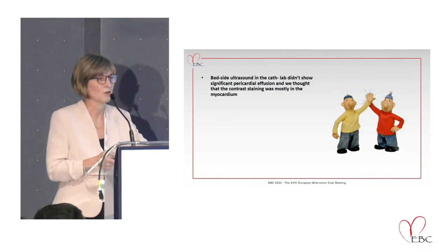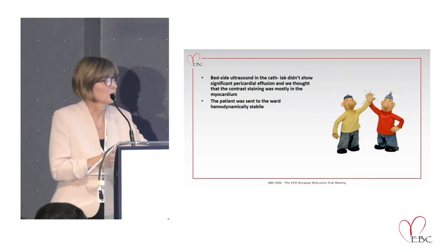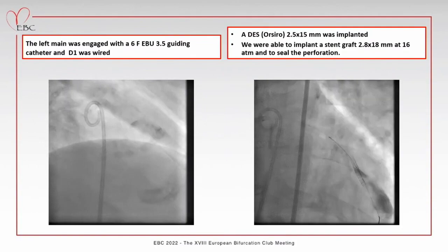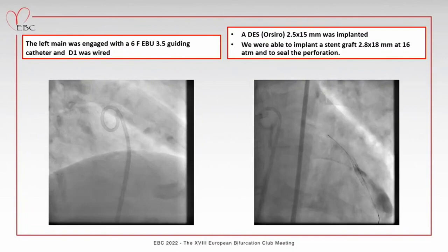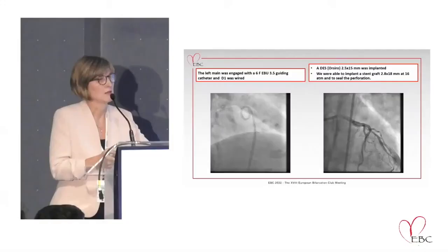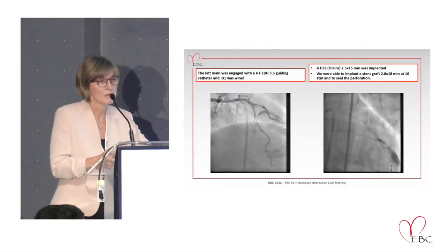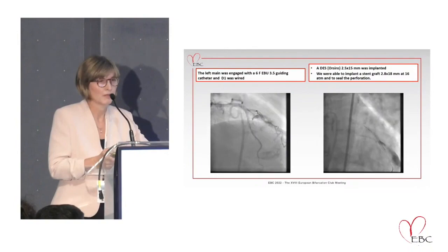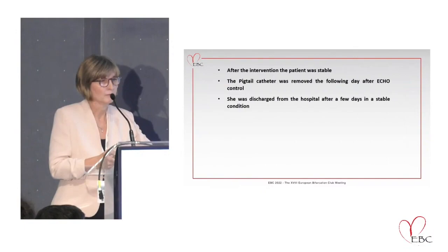Ultrasound in the cath lab was fine with no significant pericardial effusion - I thought the contrast staining was mostly in the myocardium. She went to the ward feeling fine but after one hour complained of chest pain and became hypotensive. She came back to the cath lab - there was pericardial effusion and tamponade. We performed pericardiocentesis and evacuated about 300mL of blood.